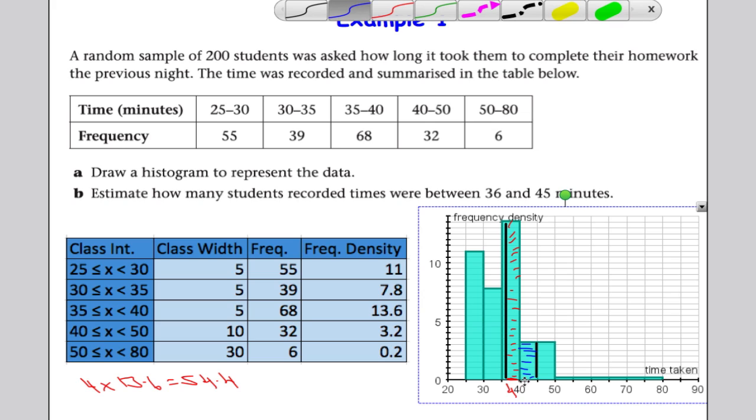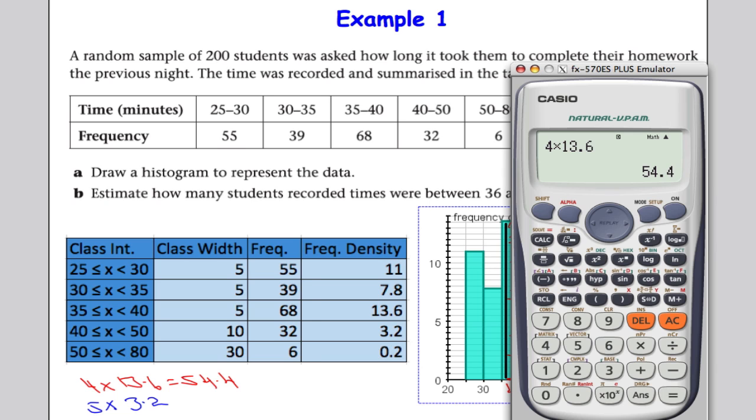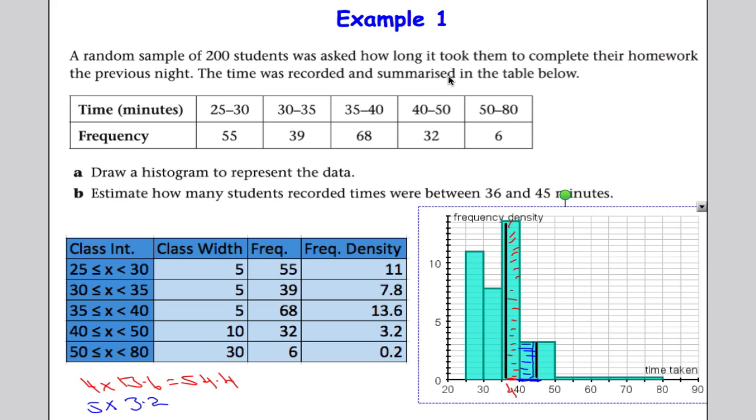Similarly, I need to work out the area of the blue bar. The blue bar has a width of 5, and it's 3.2 in height. So 5 multiplied by 3.2. Let's take out the calculator. 5 times 3.2 is 16. That means the total frequency for this interval between 36 and 45 is going to be the sum of these two values. I'm going to add them together and I get 70.4. Approximately 70 students.